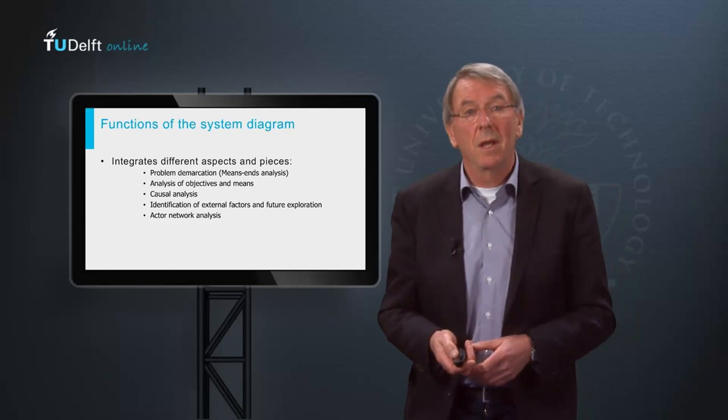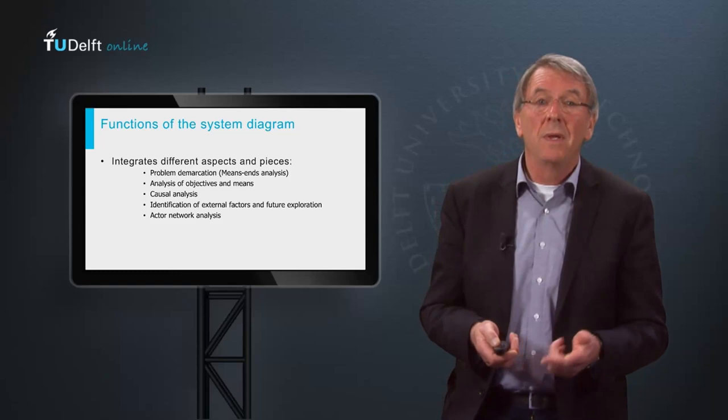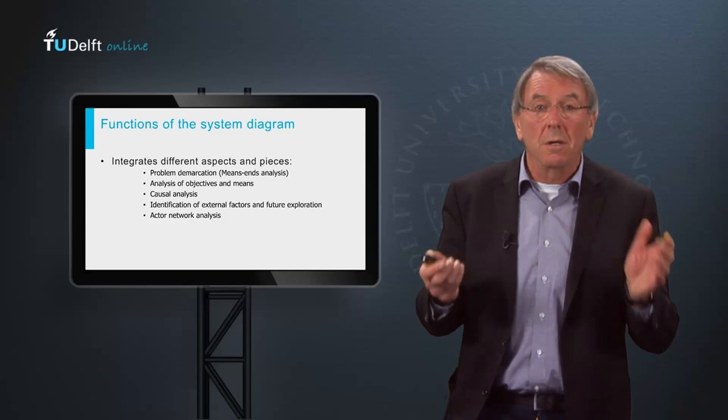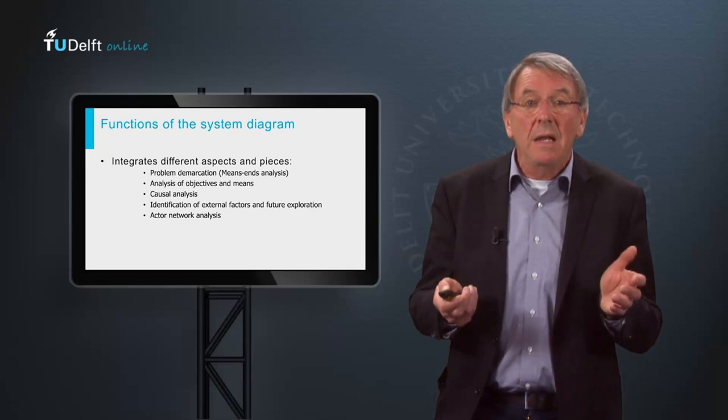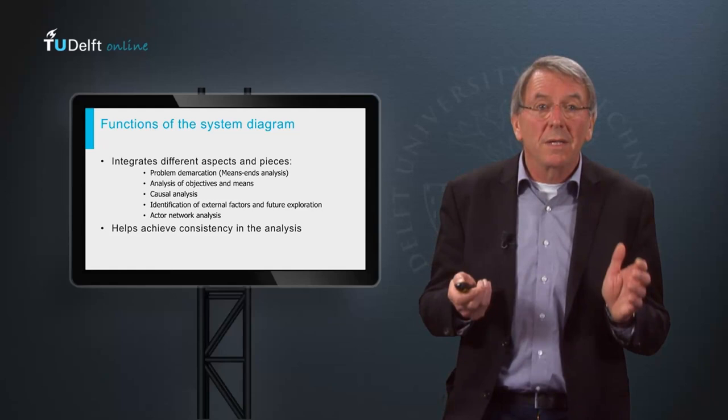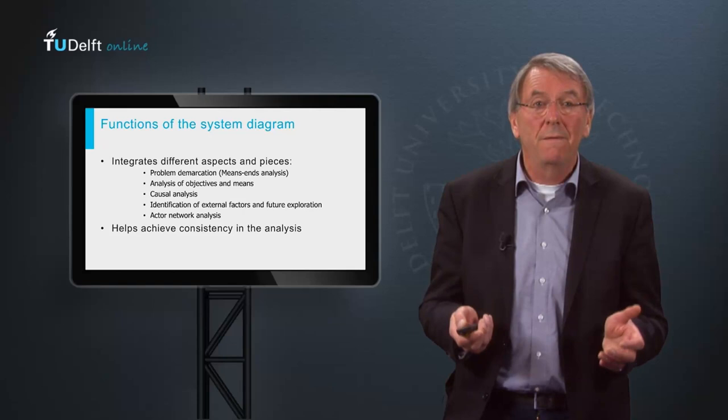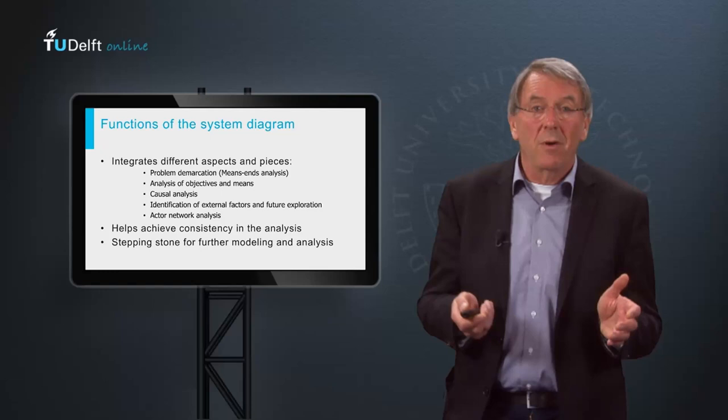More particularly, use of a system diagram provides a basic structure that will help you integrate and connect the demarcation of the problem area, the analysis of objectives and means of the problem owner, the causal assumptions about how the means affect the attainment of the objectives, the identification of external factors and their possible future influences, and the actor and network analysis. Because it helps you integrate and connect these elements, a system diagram is an essential aid for achieving consistency in your analysis.